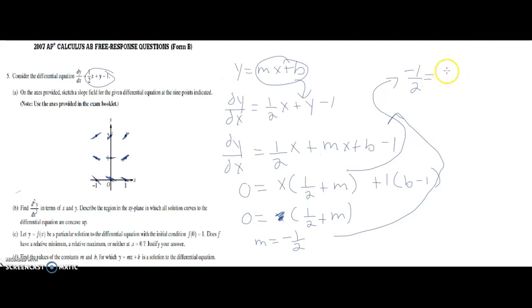Which is going to be zero, is going to equal to b minus one. I'm sorry, plus b minus one, not equals.